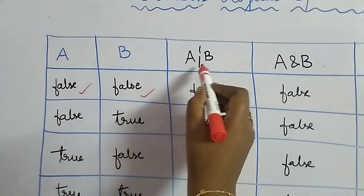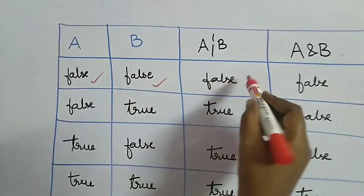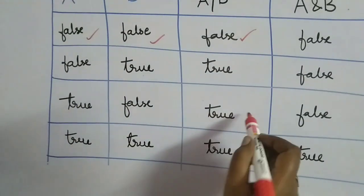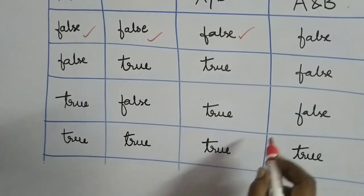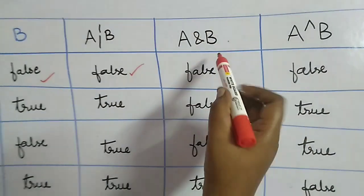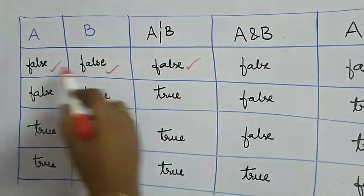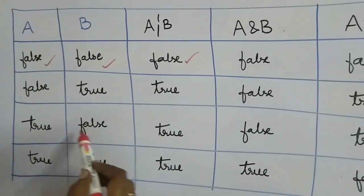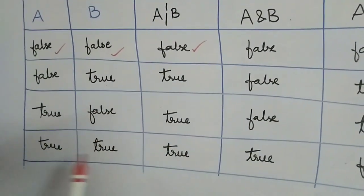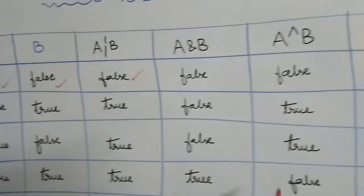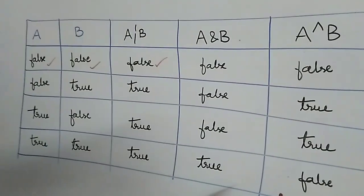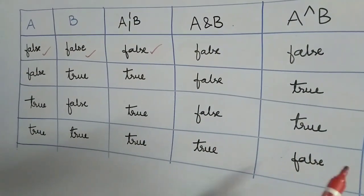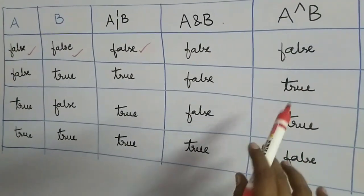For OR: false OR false is false, false OR true is true, true OR false is true, true OR true is true. For AND: if both are false or any one is false, the result is false; only when both are true is the result true. For exclusive OR: both false or both true gives false; otherwise it gives true.